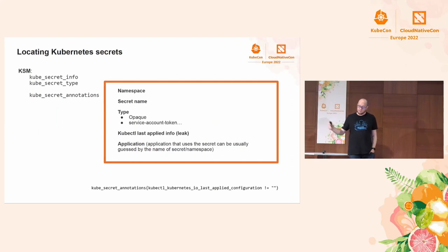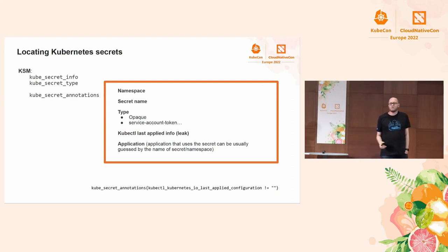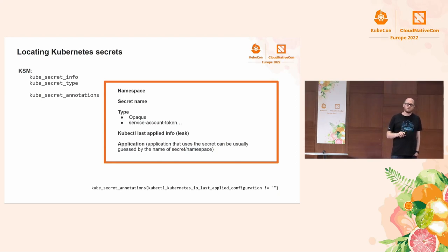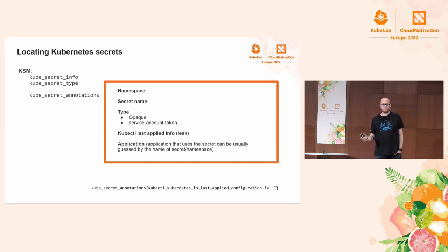Last but not least, we also get information about secrets. You might say you only know the name of the secret, but we also have information about the annotations and the content of those annotations. In some versions of kubectl, kubectl was adding an annotation of the current applied configuration that was exposing in plain text the actual content of the secrets. This meant all roles and role bindings to service accounts were meaningless because the secrets were being exposed directly in your KSM Prometheus metrics.